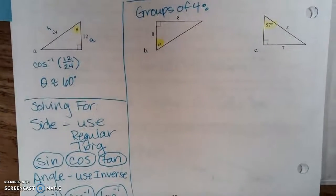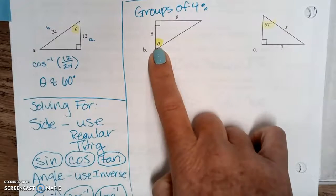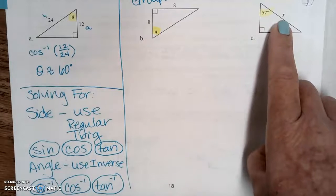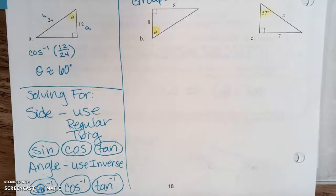For parts B and C that you're going to do in your groups of four, one of them you're solving for an angle, so you're going to use inverse trig, and one of them you're solving for a side, so you're going to use regular trig. Go ahead and turn into your groups.